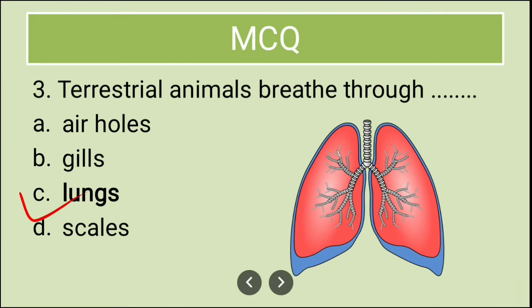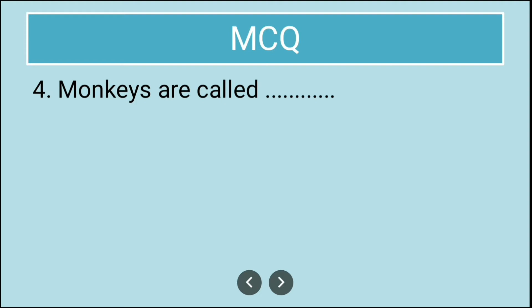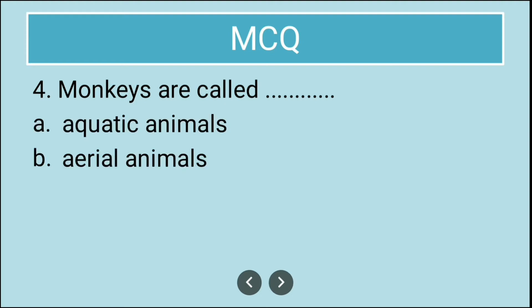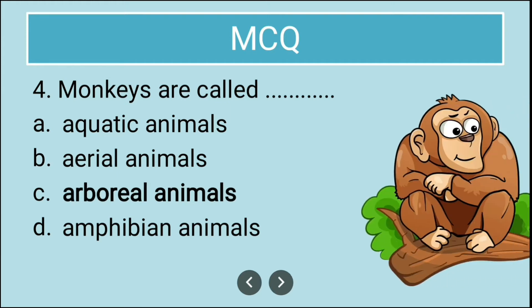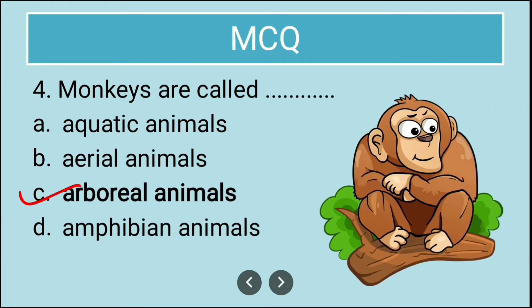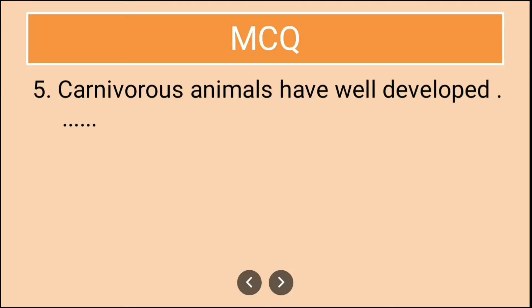The fourth question is: monkeys are called dash. The options are aquatic animals, aerial animals, arboreal animals, and amphibians. Monkeys are arboreal animals because they spend most of their life on trees.